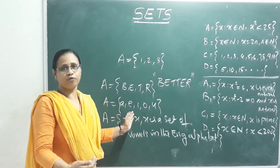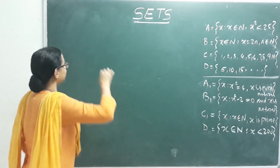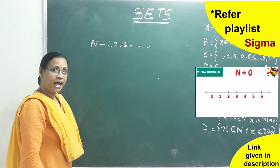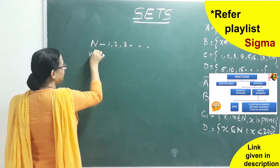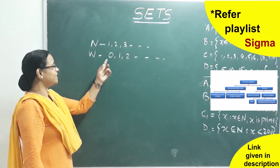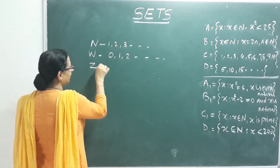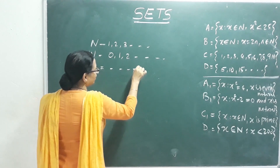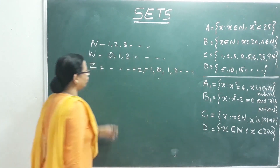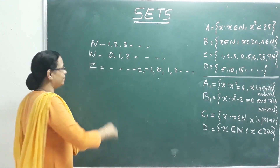We have a few standard notations. Natural numbers are denoted by N: 1, 2, 3... Whole numbers include 0 and are also denoted by W: 0, 1, 2, 3... Integers include negative numbers, 0, and positive numbers, denoted by Z.